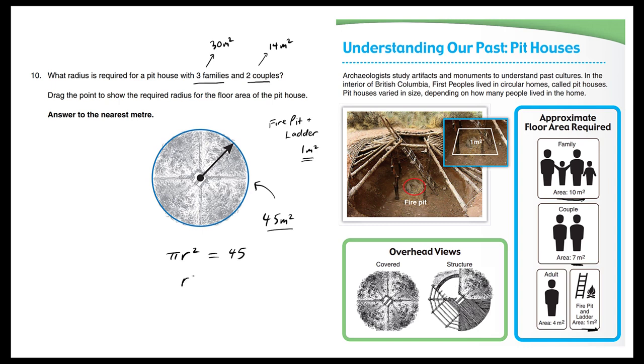We're going to divide both sides by pi. And then we're going to take the square root of both sides. Using your calculator, we get 3.78 meters. So rounding to the nearest meter, we should have 4.